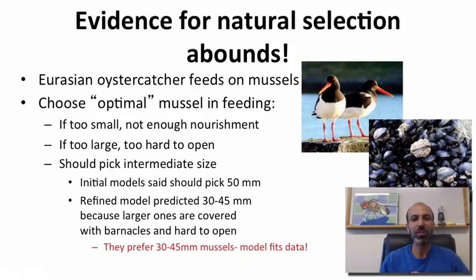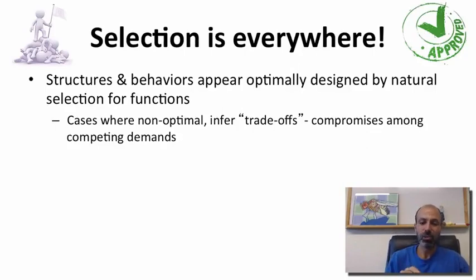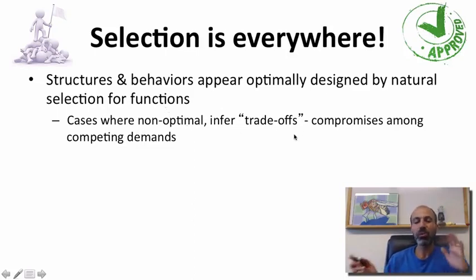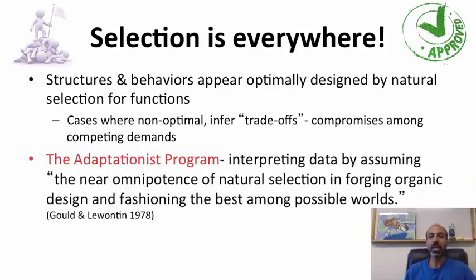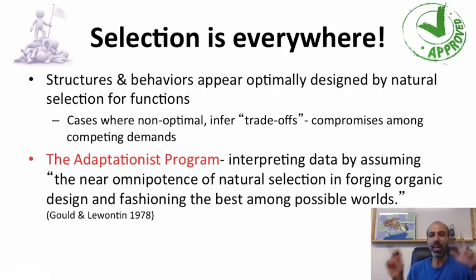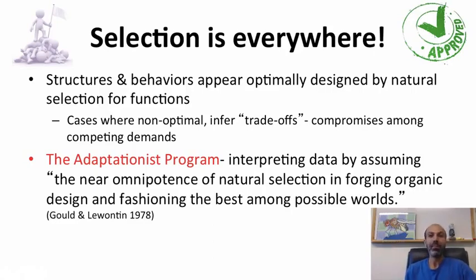This should cause you a little concern when somebody just manipulates a model to make it fit the data. There is this view that selection is everywhere — that structures and behaviors are optimally designed by natural selection for their function — and whenever we see something non-optimal, we infer a trade-off or some compromise among competing demands. This is a little risky because basically you're making it so every possible observation will eventually fit your model. Gould and Lewontin criticized this and referred to it as the adaptationist program — interpreting data by assuming the near omnipotence of natural selection in forging organic design. This is often called adaptive storytelling: we see something and make up an adaptive story until it seems to fit. That's not good science, and unfortunately this kind of thing has happened for a very long time.